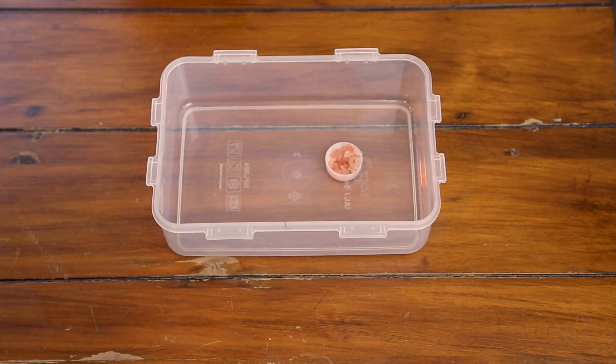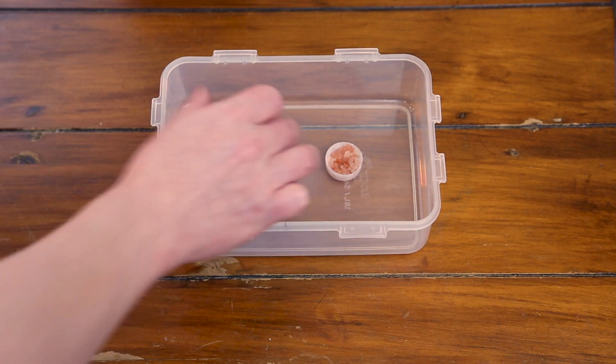Place the smaller container and the hygrometer in the larger container. Seal it and make sure it's airtight.